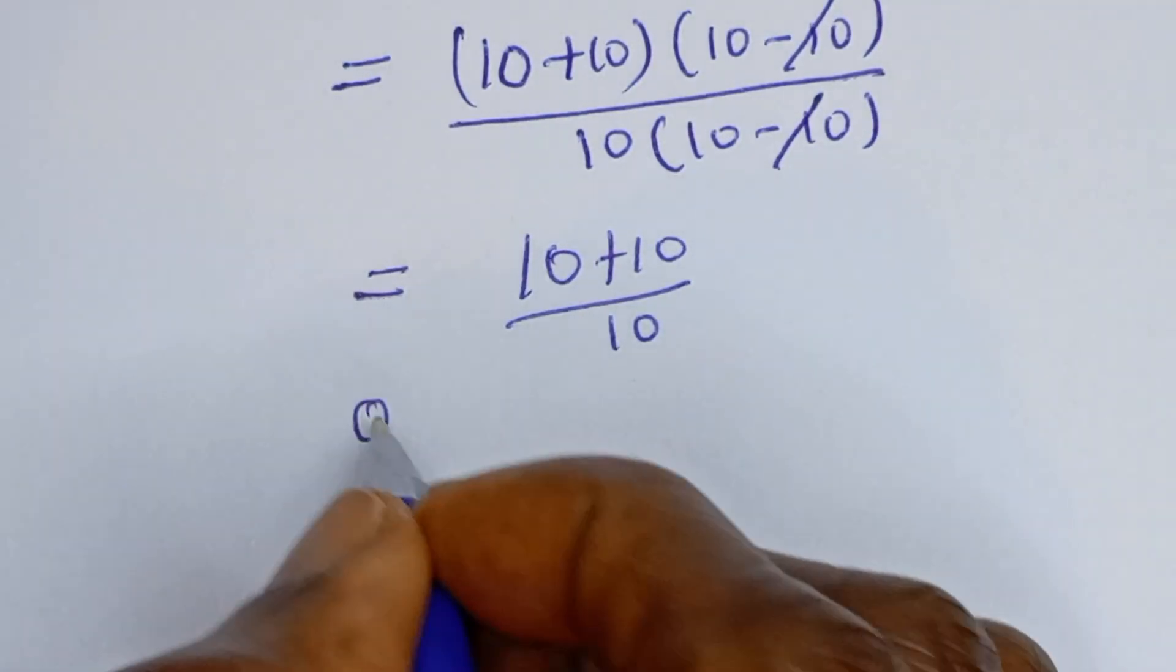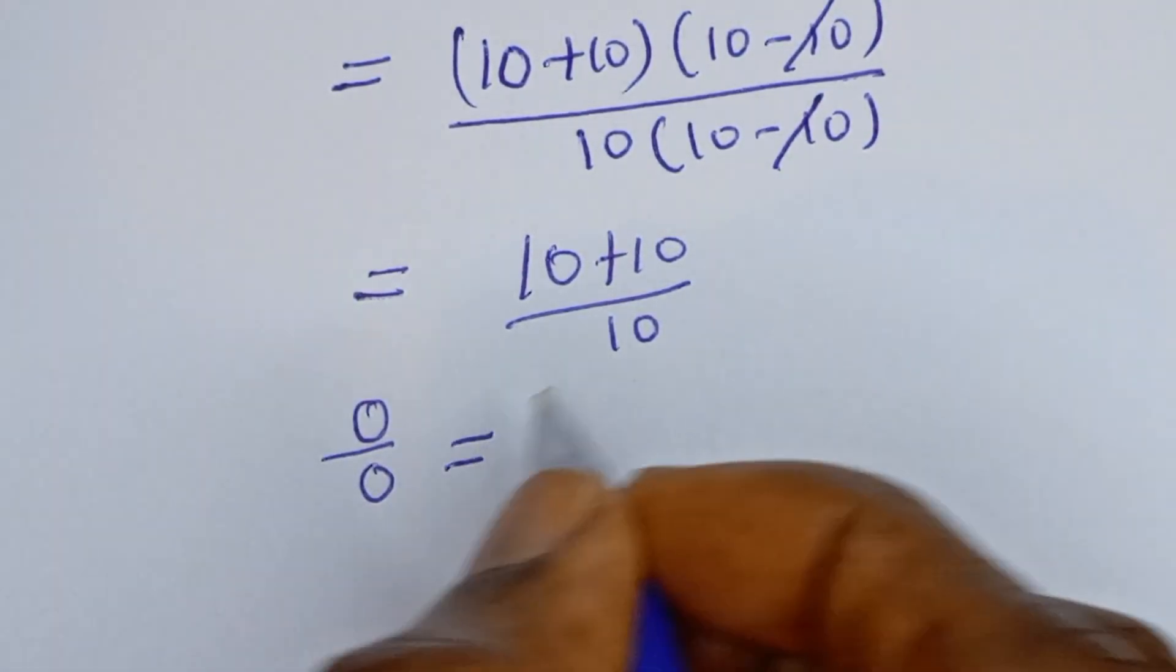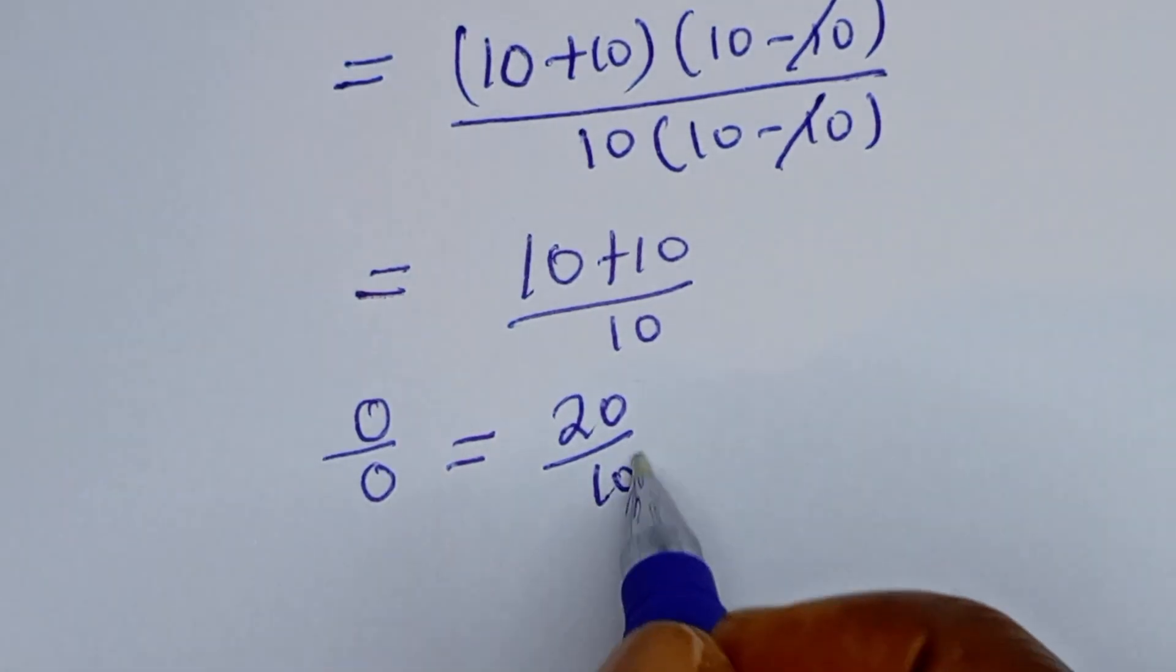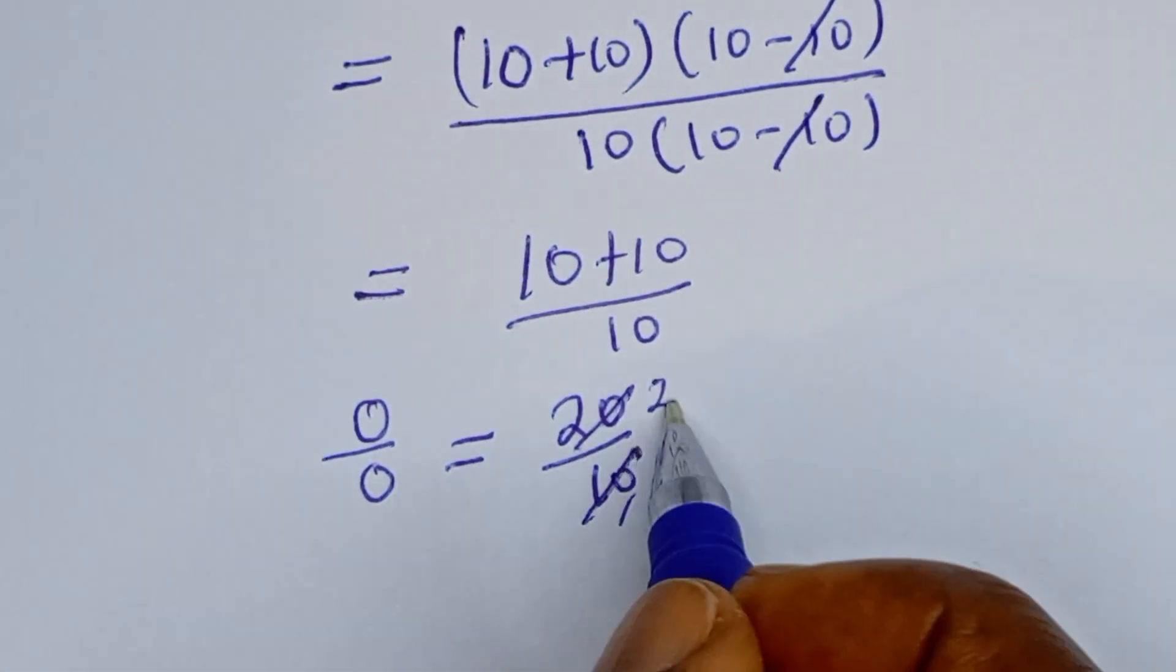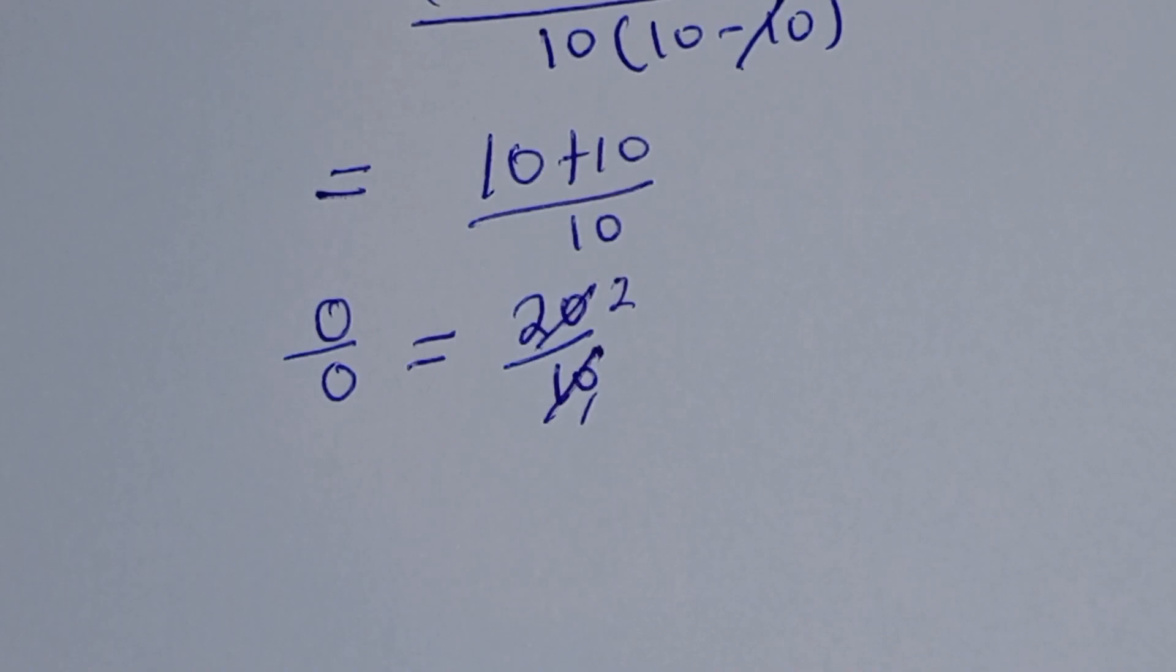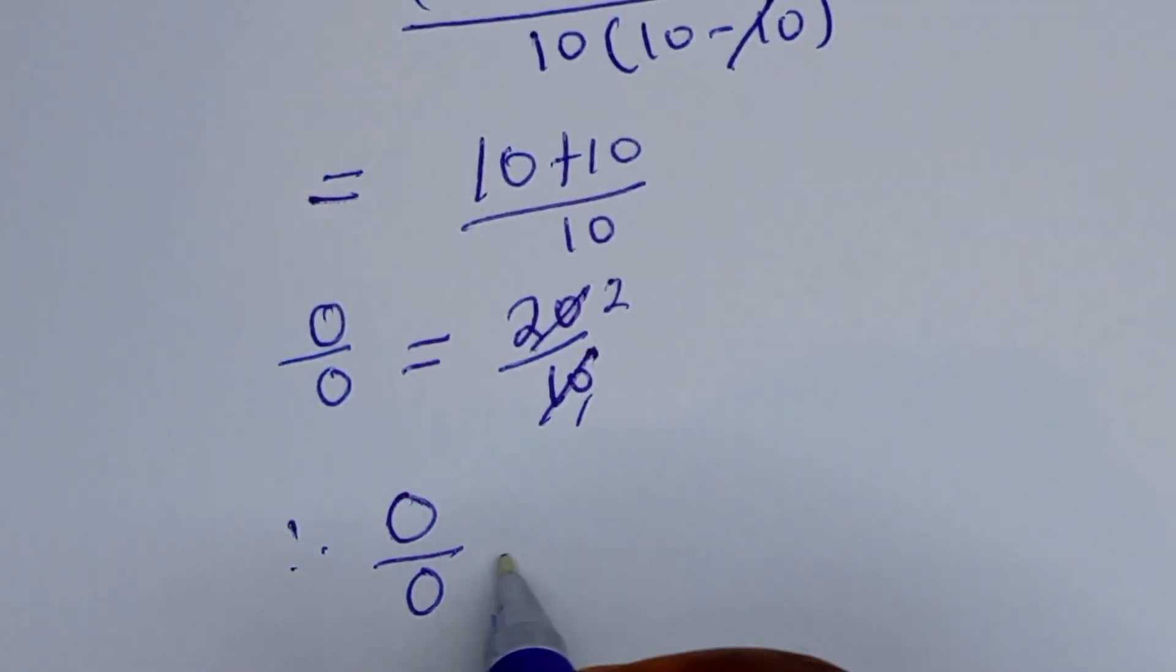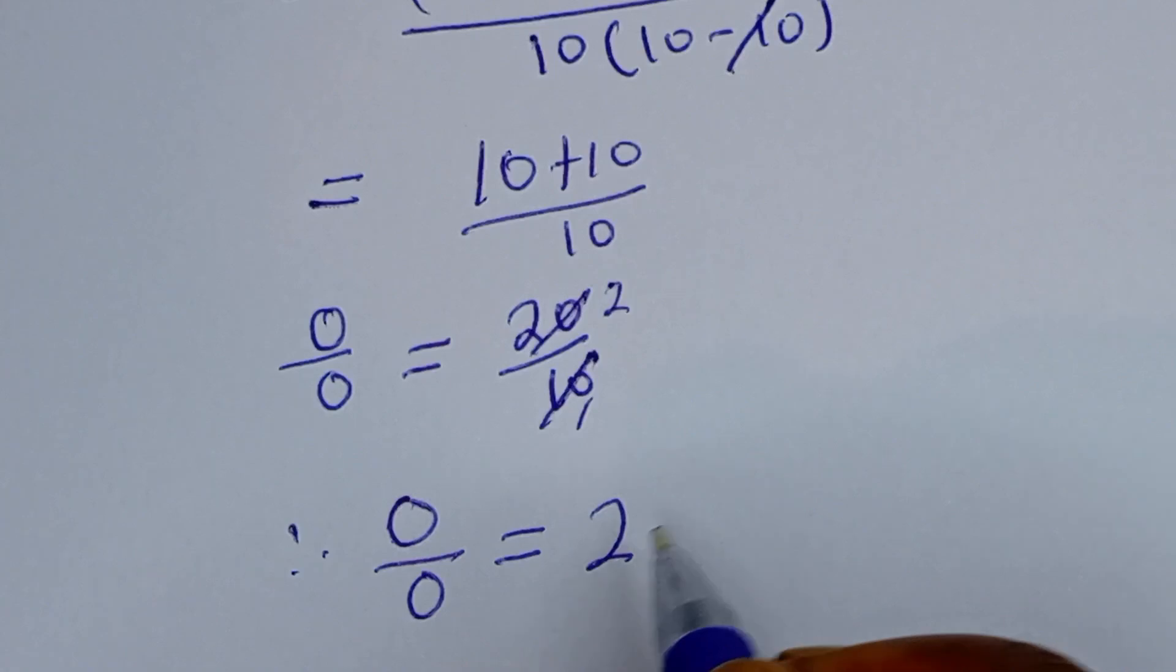0 divided by 0 is equal to 10 plus 10, this is 20 over 10, which equals 2. Therefore, 0 divided by 0 is equal to 2.